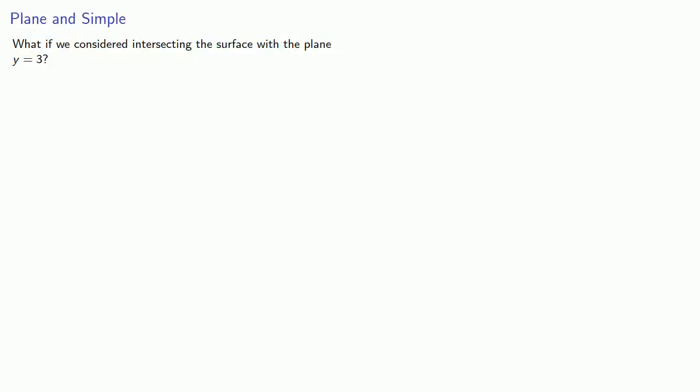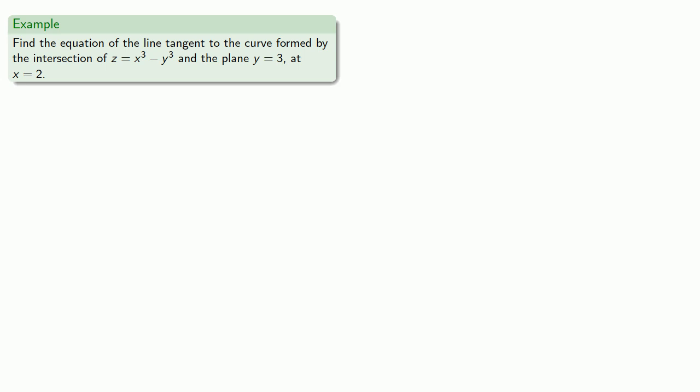What if we considered intersecting the surface with the plane y equals three? Well, in that case, we get a different tangent line. Let's take a look at that. So again, same curve, and we want x equals 2, y equals 3, z equals negative 19 still, but this time, instead of taking the plane x equals 2, we'll take the plane y equals 3, and that allows x and z to change,